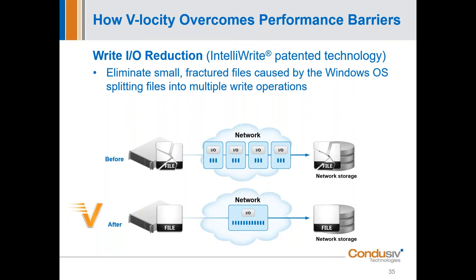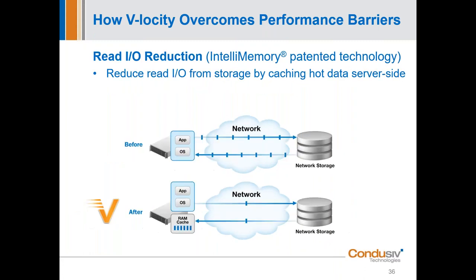Keep in mind that how it writes is how it reads. So when you get that 30% reduction because of the IO transformation from the writes, when it goes to read back, it's already in that optimized state and you're going to get faster read back as well. To layer on top of that read optimization, we enter in our second filter driver, IntelliMemory — this is DRAM read caching. You could consider this to be our tier-zero cache strategy.